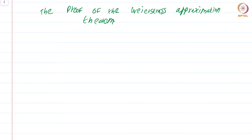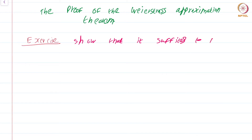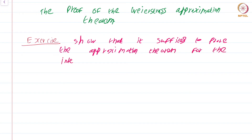We now give the proof of the approximation theorem. We will first make a reduction that should have been clear during our discussion of the Bernstein polynomials. Exercise: show that it suffices to prove the approximation theorem for the interval [a,b] being the closed interval [0,1]. You do not need to establish it for an arbitrary interval; the special case [0,1] is enough. Once this exercise is done, we will focus on [0,1] and use the Bernstein polynomials.